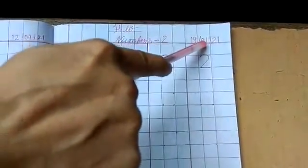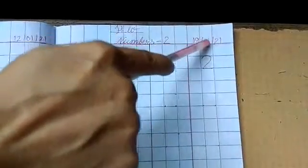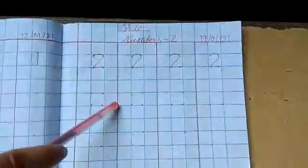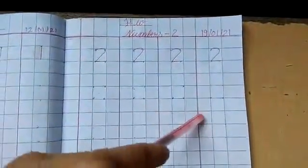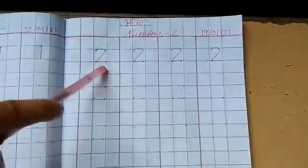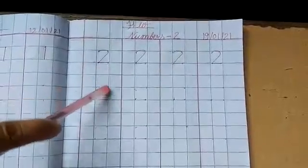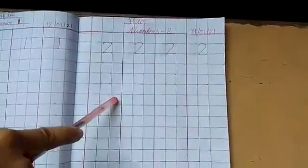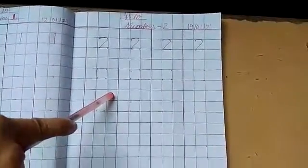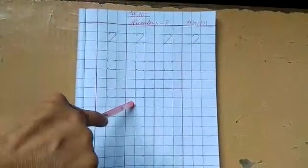Homework: आपके पास square line की copy है ना बच्चो? उसमें आपको setting करनी है. यहाँ पर hw लाना है — numbers 2, date 19/01/2021 डालना है, 3 lines draw करना है, 4 times number 2 writing करना है. जैसा मैंने setting की है वैसे ही proper setting और proper writing करना है. Thank you.